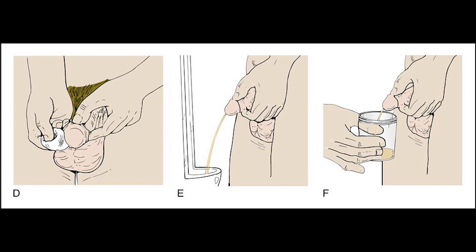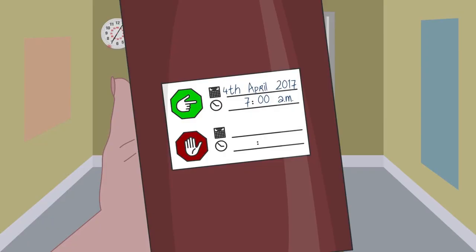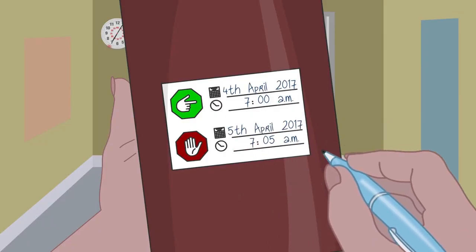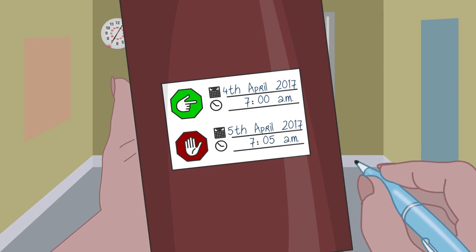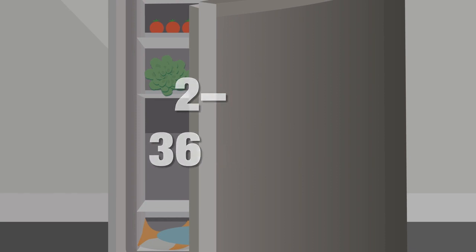Make sure to avoid touching the skin area. 4. Fill half of the container and remove from the stream. 5. Cover the container and screw the lid tightly. 6. Properly label the container taking into consideration the information needed. 7. Refrigerate the specimen until it is ready for transport to the laboratory.